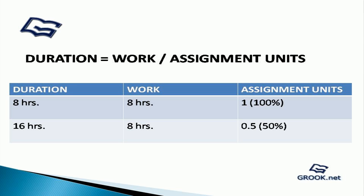For a resource who works 8 hours a day, if he works the full 8 hours on just one task, then the assignment unit is 100%. If he works for half a day on a particular task — that is, for 4 hours — it is 50%.